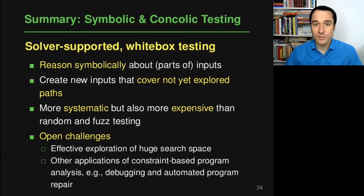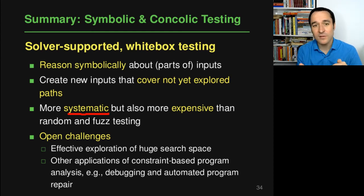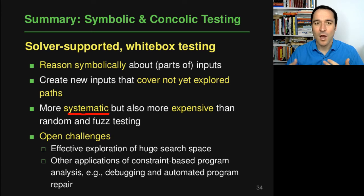In contrast to the techniques seen in the previous lecture on random testing and fuzzing, these techniques are more systematic because they actually look inside the program and know exactly which path has not yet been covered, then make a specific change to the input to cover that path. With random testing and fuzzing, it was a much less systematic way of generating new inputs — basically hoping to trigger some new behavior.